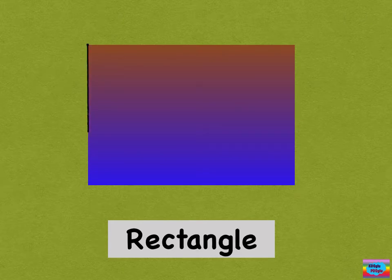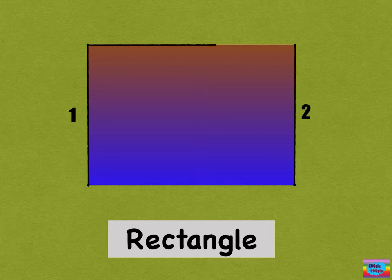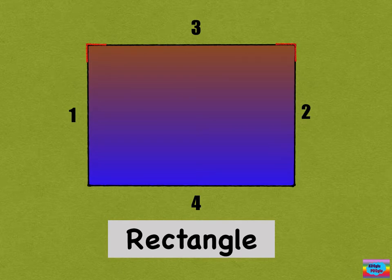A rectangle has one side, two side, three side, and four side. And one corner, two corner, three corner, and four corner.